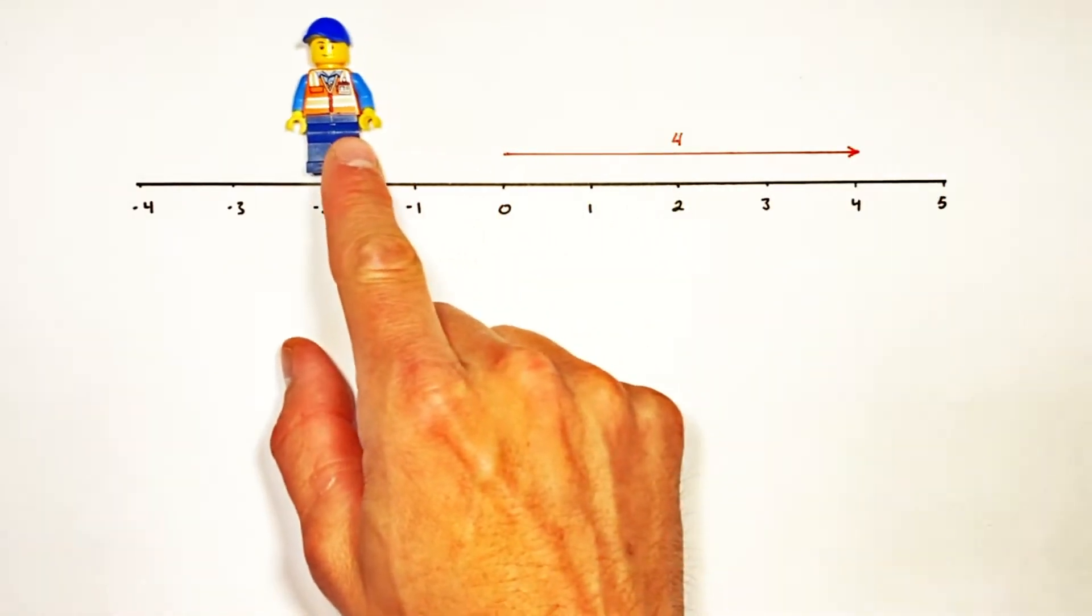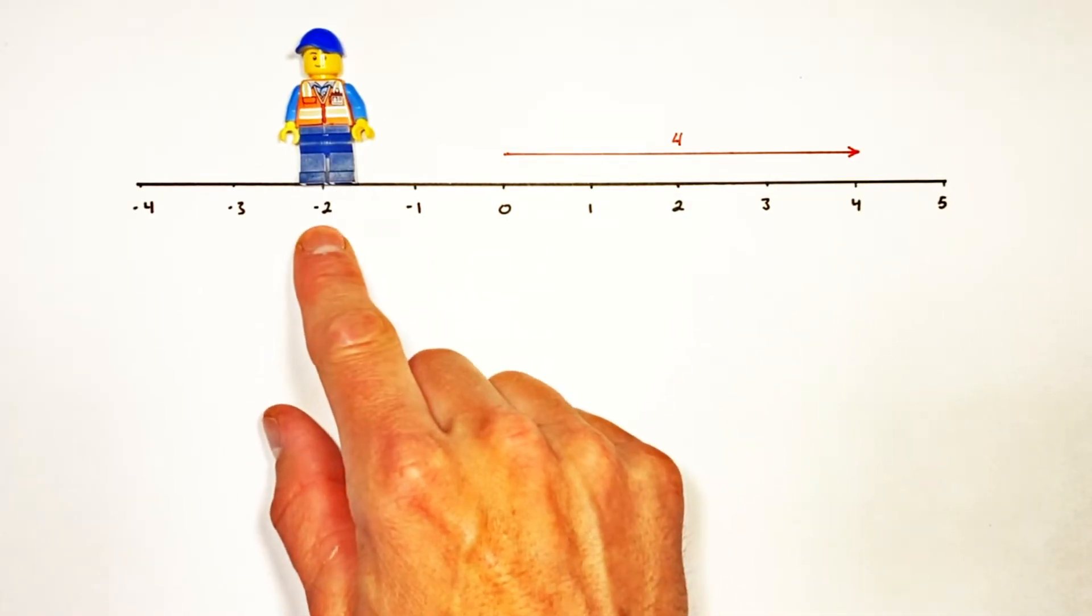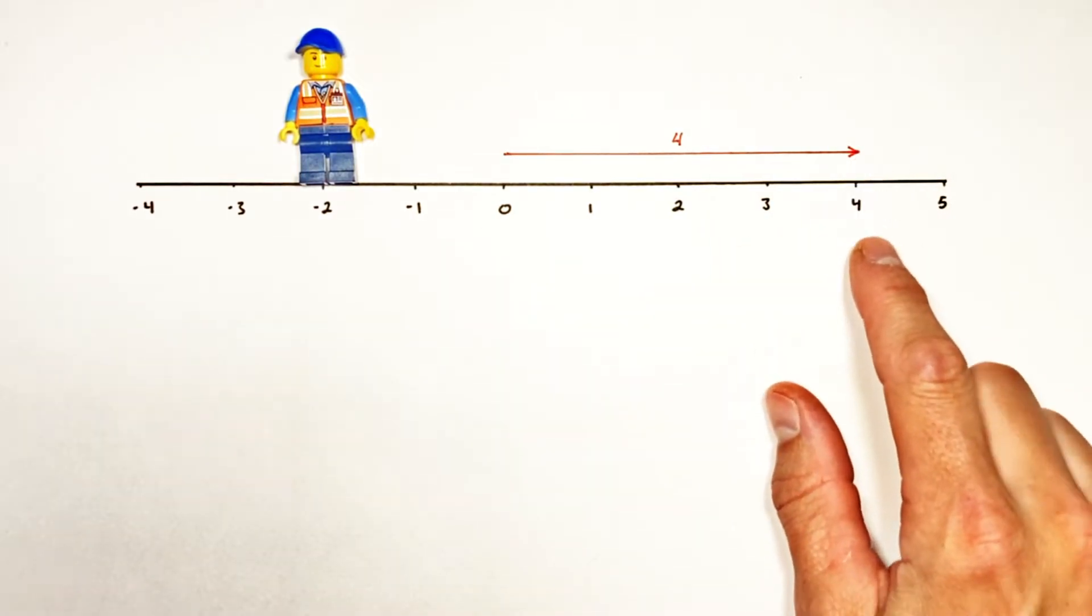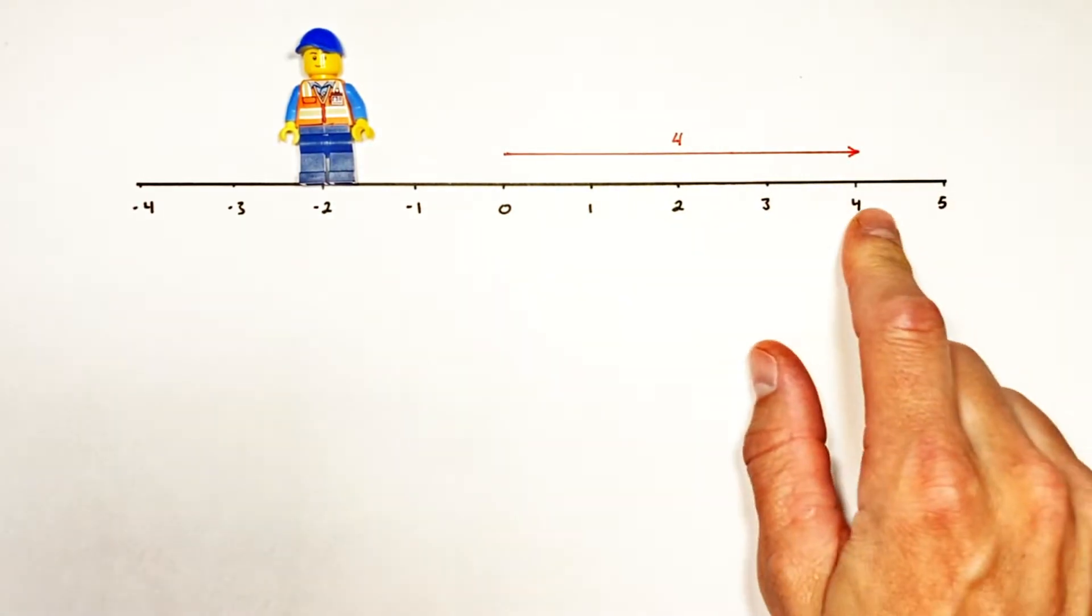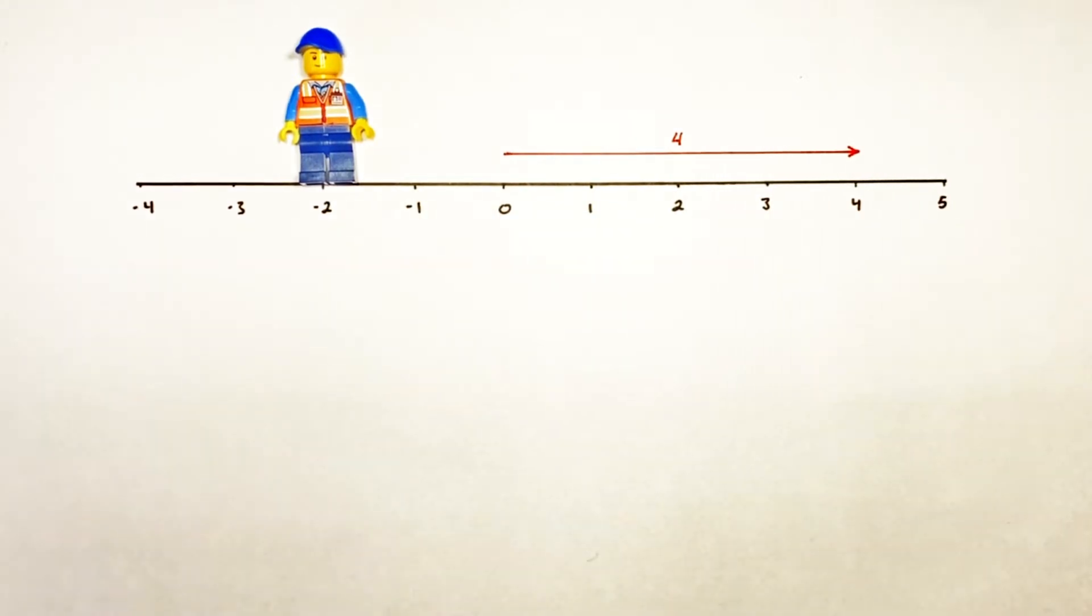And then we're going to have him turn around and walk back, let's say all the way over to this position over here of negative two. So that would be a distance traveled from four all the way to negative two. If you count them up, that's a distance of six.